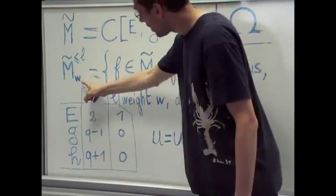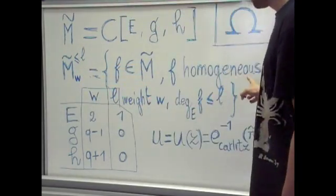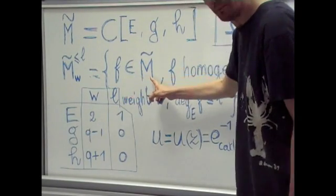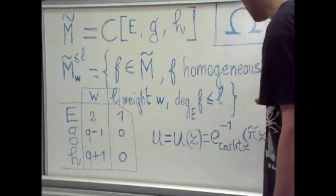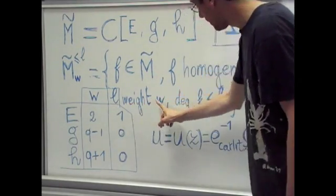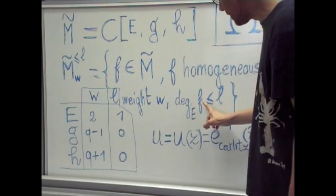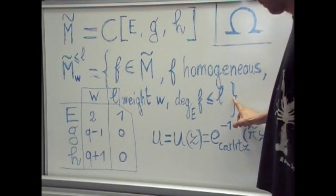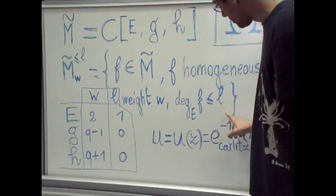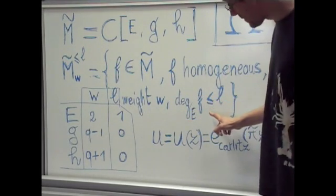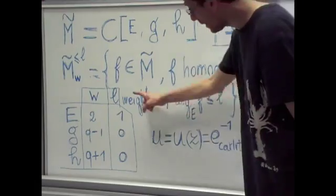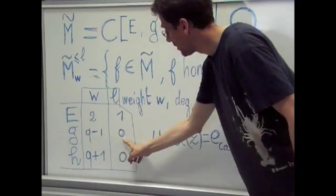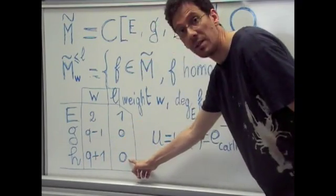With this notation, we indicate the C-vector space whose elements are those F in M-tilde which are homogeneous of weight W and such that their degrees in E are less than or equal to L. We refer to this degree as the depth of a polynomial so that E has depth 1, G has depth 0 and H has depth 0.